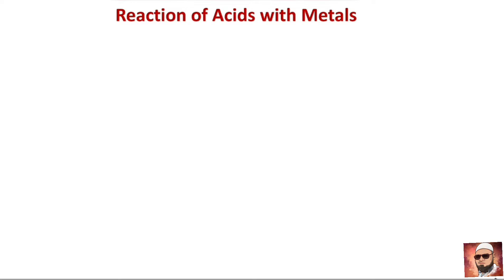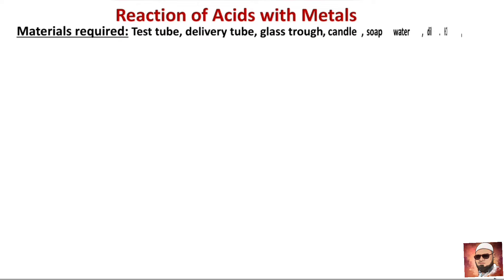We are going to show that acid reacts with metal and liberates hydrogen gas. To do this activity we require materials like a test tube, delivery tube, glass stuff, candle, soap water, dilute HCl (hydrochloric acid), and zinc granules.